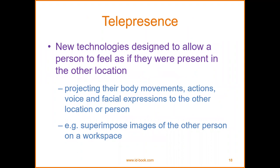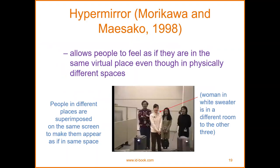We have telepresence — a new technology designed to allow a person to feel as if they were present in another location, projecting their body movements, actions, voice, and facial expressions to the other location or person. There are also superimposed images of another person on a specific workspace. Hypermirror by Morikawa and Maesako in 1998 allows people to feel as if they are in the same virtual place, even though in physically different spaces — augmented reality, holograms.